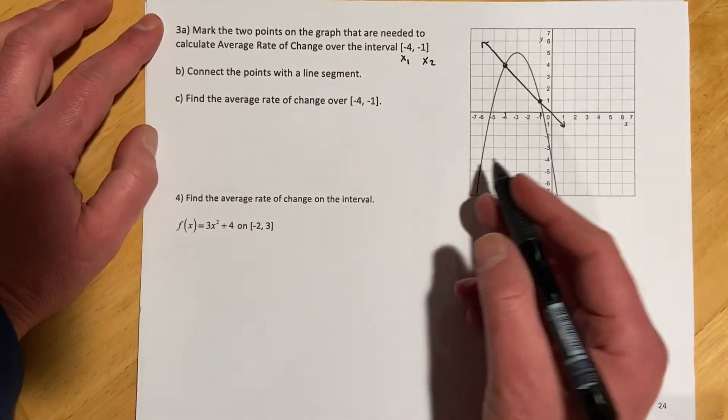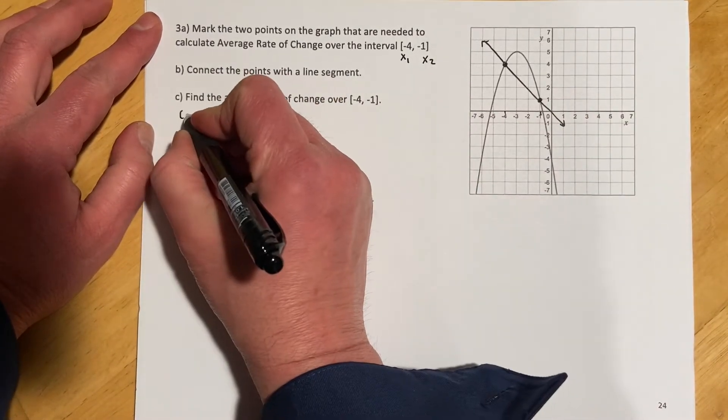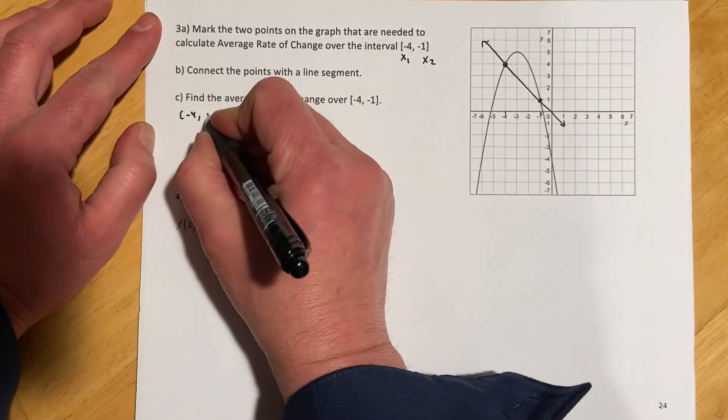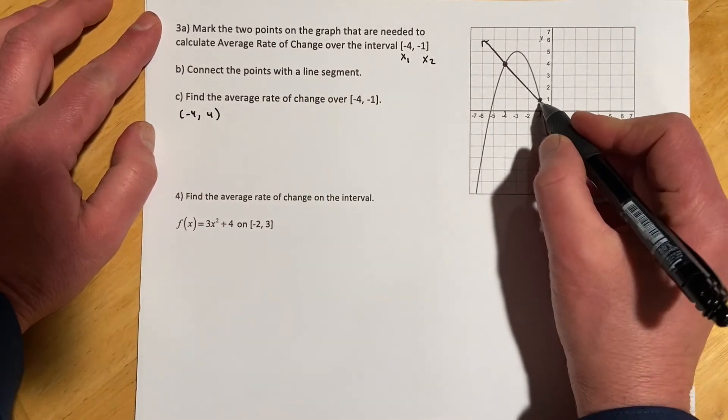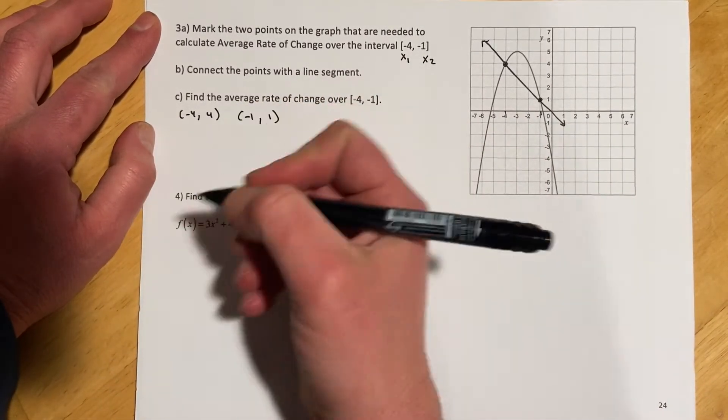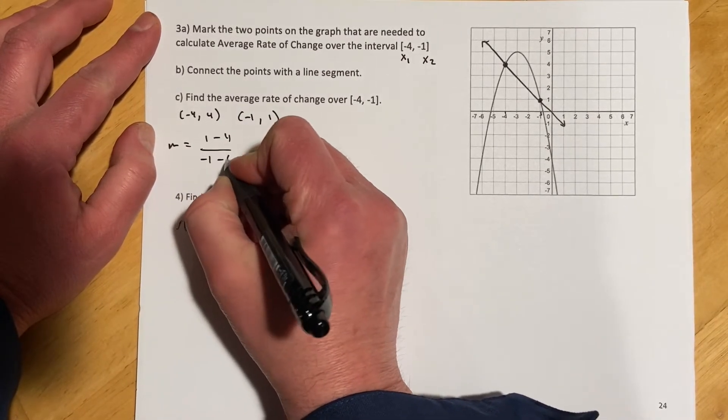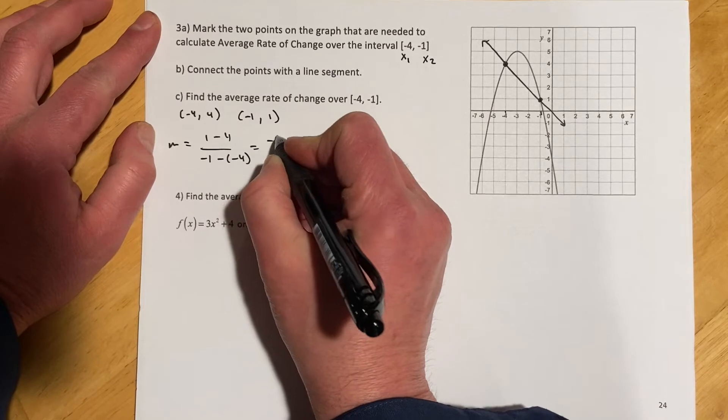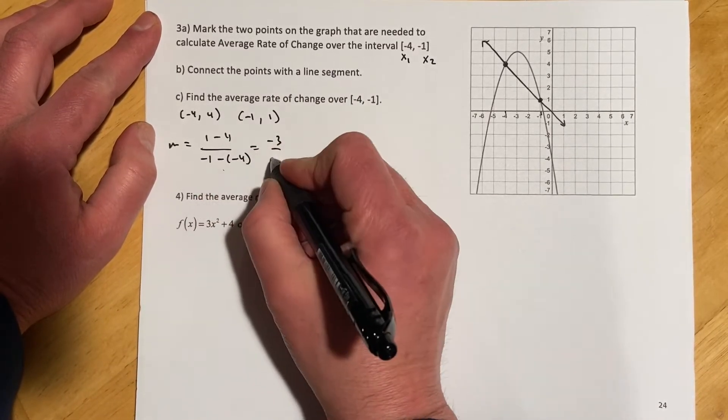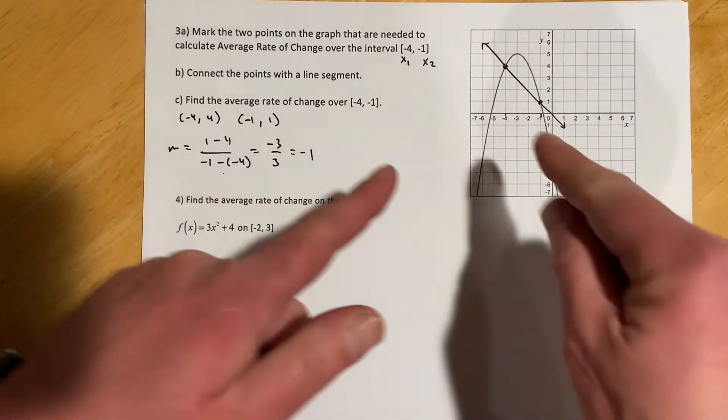Now it's just to find the average rate of change. I can do that a couple ways. If I look at the points - when I put in negative four, that came out looks like four on the graph, and then when I put in negative one, that came out one. So doing what we just did, I can say slope is one minus four over negative one minus negative four, and that would be negative three. That would change to an addition, so negative one plus four would be three. Makes negative one.